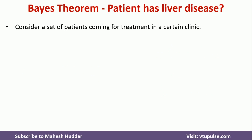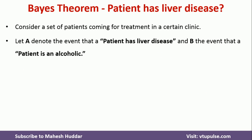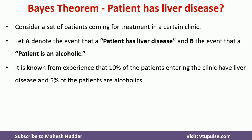Consider a set of patients coming to a certain clinic for treatment. Let A denote the patient has liver disease and B denote the patient is an alcoholic. From experience or domain knowledge, we know that 10% of the patients entering the clinic have liver disease, and 5% of the patients are alcoholic.